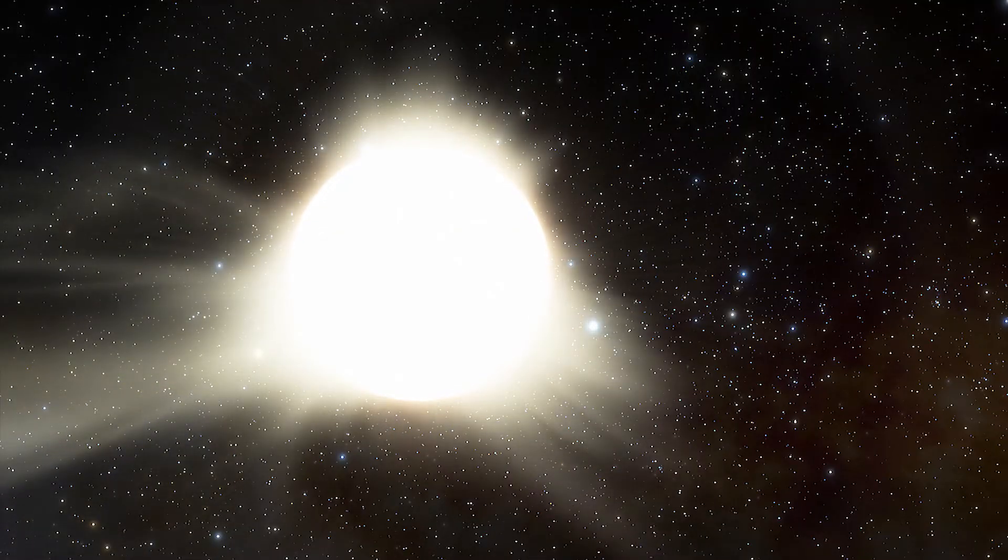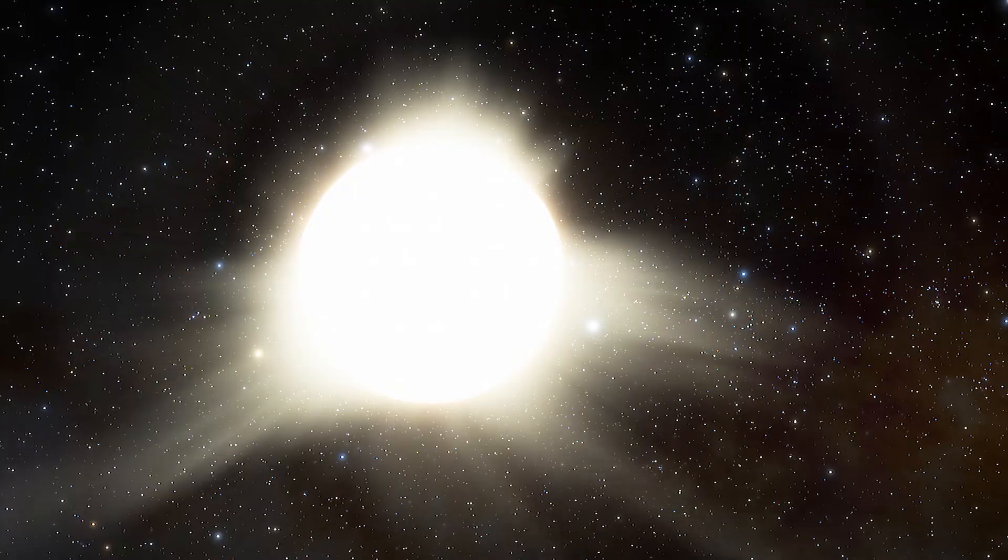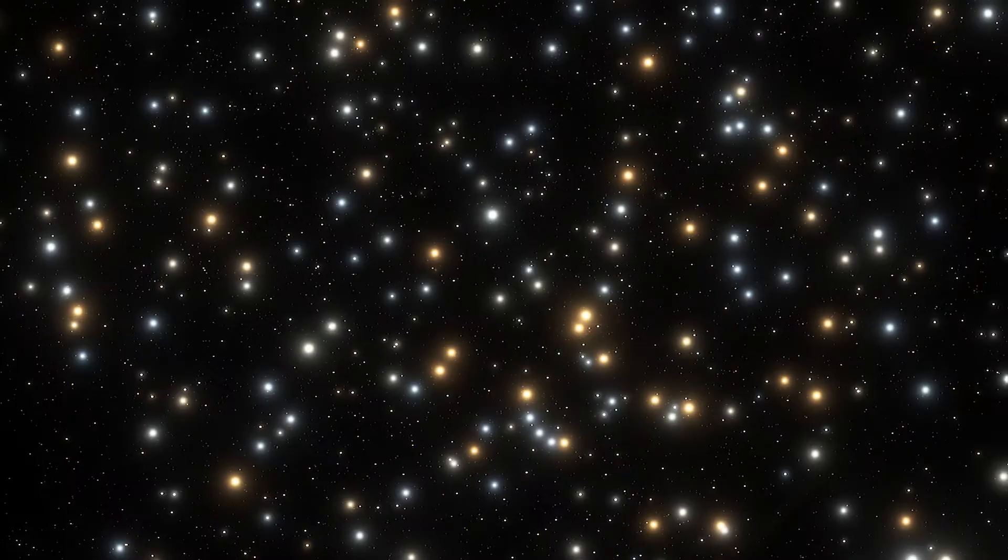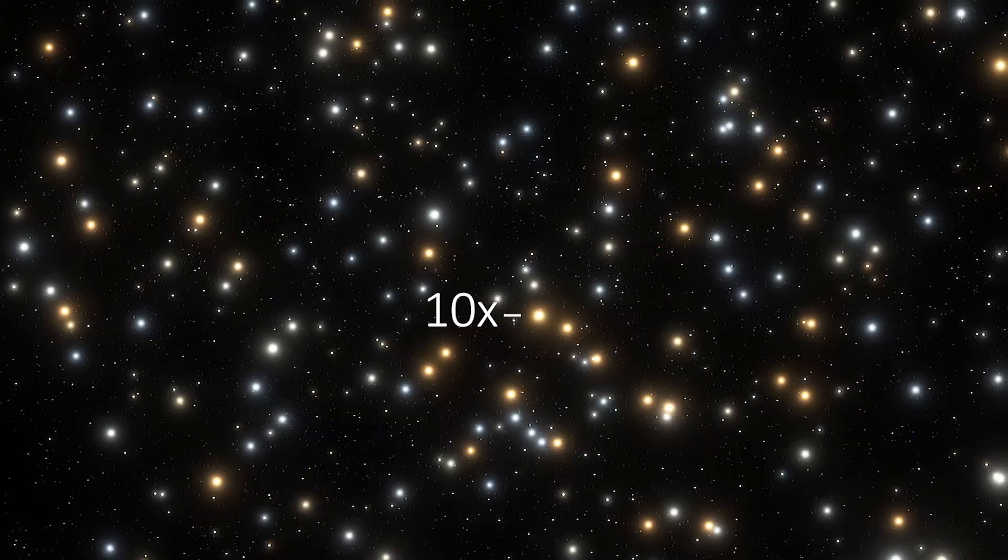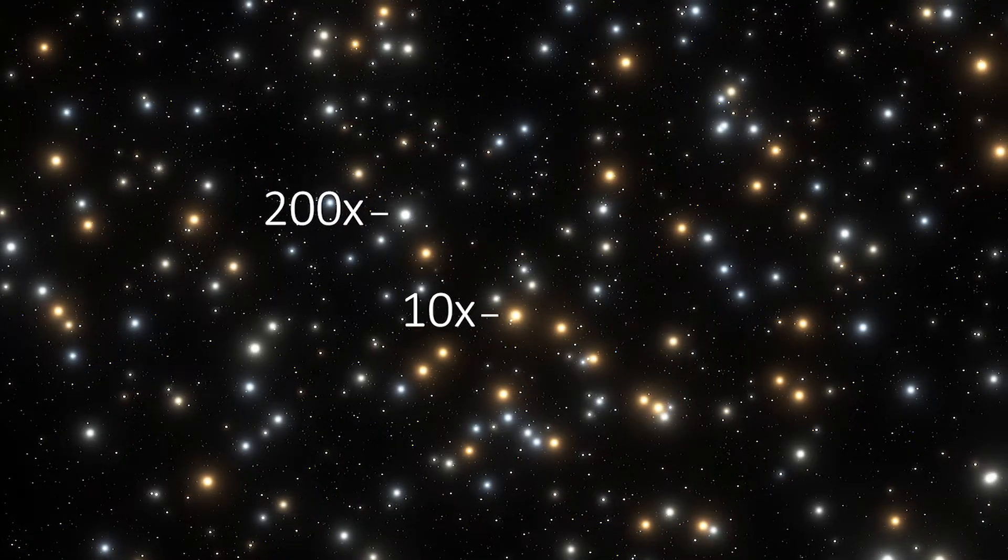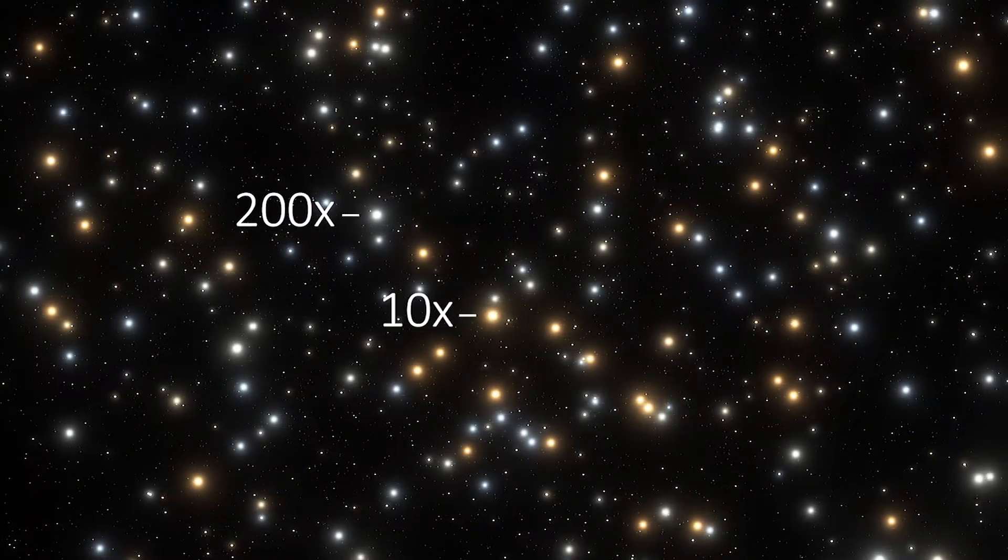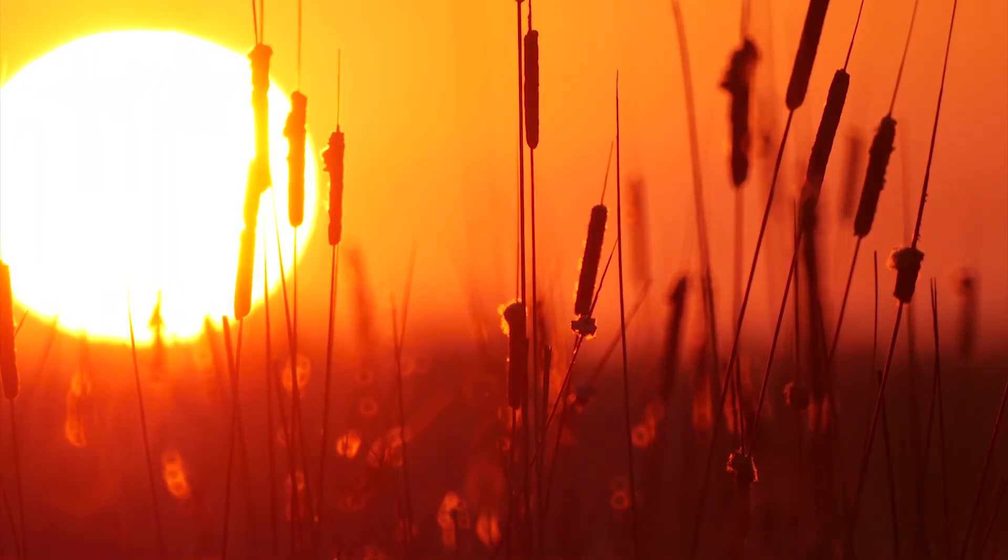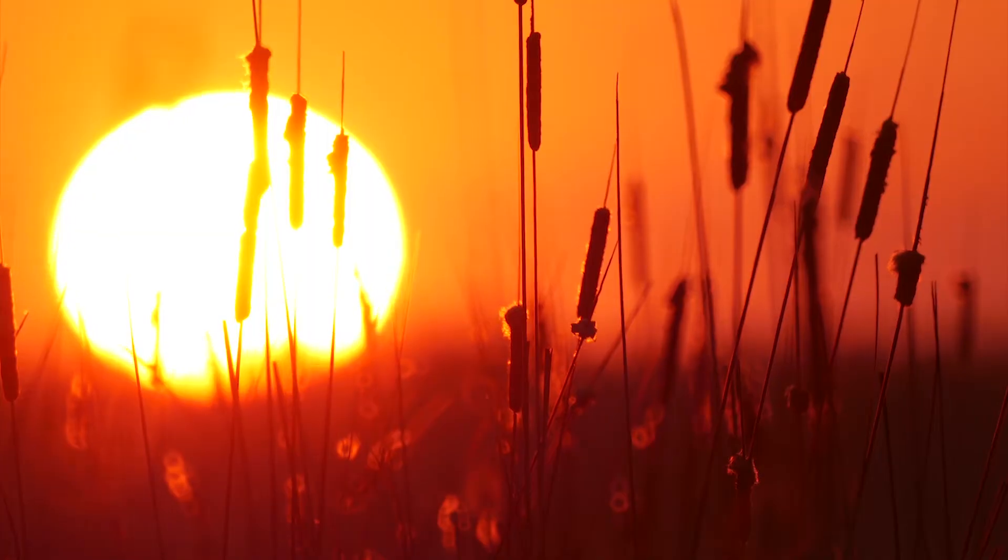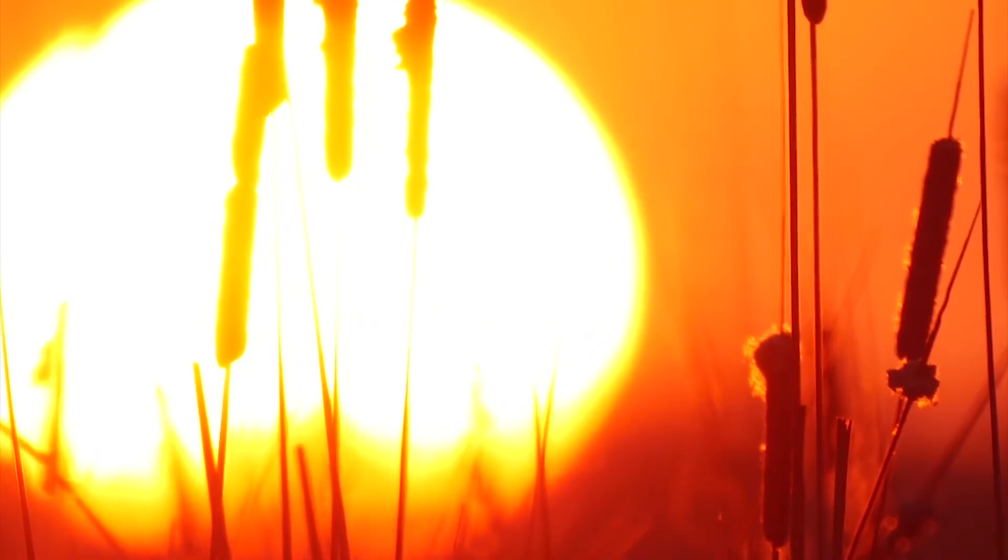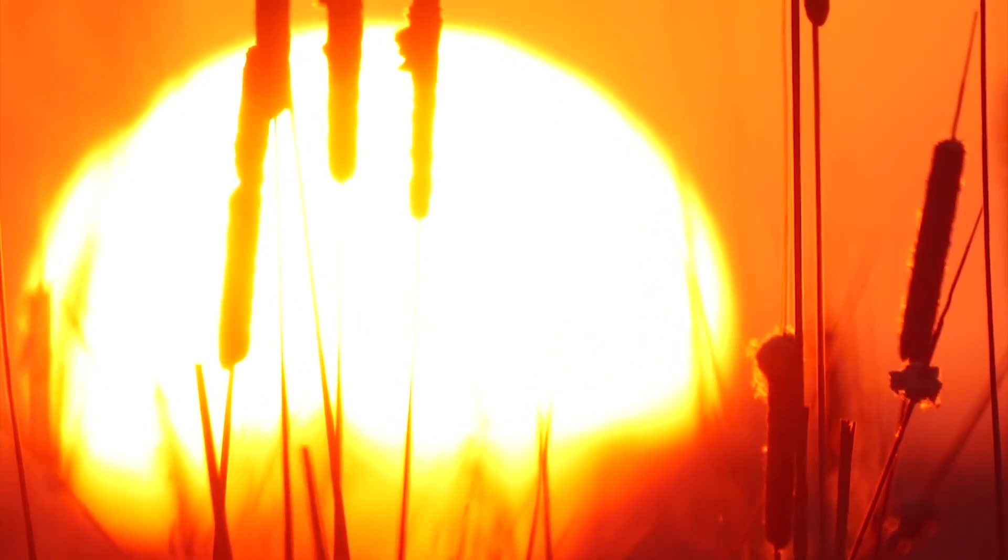How long a main-sequence star lives depends on how massive it is. These stars can range from about a tenth of the mass of the Sun to up to 200 times as massive. A star with the mass of our Sun remains in main sequence for almost 10 billion years until all of the hydrogen has fused to form helium.